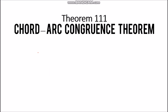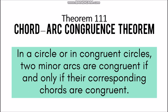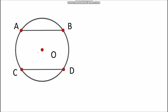Theorem 111, the Chord Arc Congruence Theorem, states that in a circle or in congruent circles, two minor arcs are congruent if and only if their corresponding chords are congruent. So if the chords are congruent then the corresponding arcs are also congruent, and vice versa. For example, you have circle O with segment AB and segment CD, which are chords of circle O.